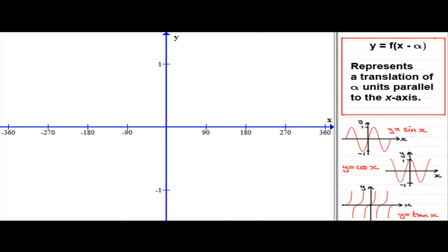Hi, welcome to another tutorial in my series on transformations of trigonometric graphs, where we look at the standard graphs that you should know: y equals sin x, y equals cos x, and y equals tan x. Now in this tutorial, what we're going to look at is the transformation y equals f(x - α), which represents a translation of α units parallel to the x-axis. And α is a positive or negative constant.